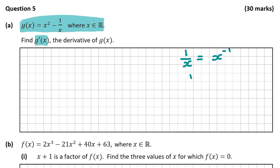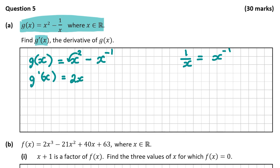So I'm going to rewrite g of x as x squared minus x to the power of minus 1. Now I'm going to start to derive it. So g dash x, the derivative, is equal to — I'm going to bring the 2 down here: 2x, and then take away 1 from the power, so that's the power of 1, we can just leave it as 2x. Minus: bring down minus 1, multiplied by x, and then reduce this power by 1, so it's going to be to the power of minus 2.